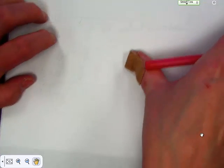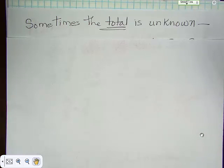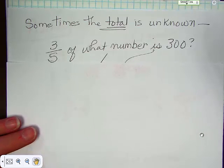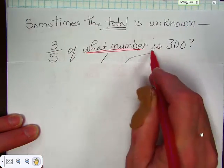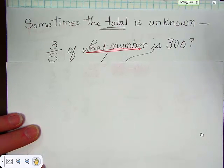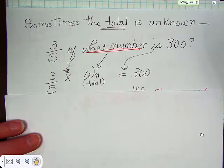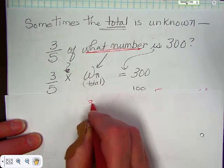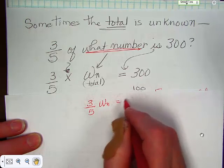Okay, let's look at another one. Sometimes the total is your unknown. So in these sentences, you have to look for other things. In this case, maybe the total is unknown. So, three-fifths of what number, that's your total, is equal to 300? Three-fifths times what number is 300? So we start out, it looks like this, and you end up looking like this. Three-fifths, what number, which is your total, equals 300.